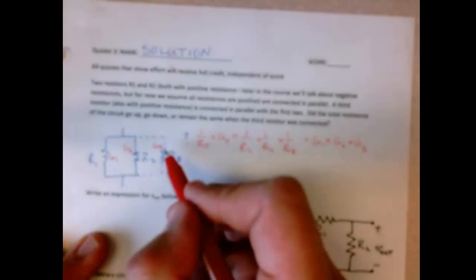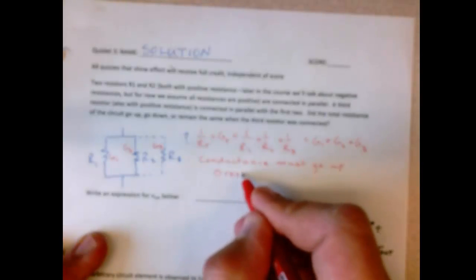So the conductance, when you add this third resistor, the conductance can only go up, must go up. So that means that the resistance must go down.